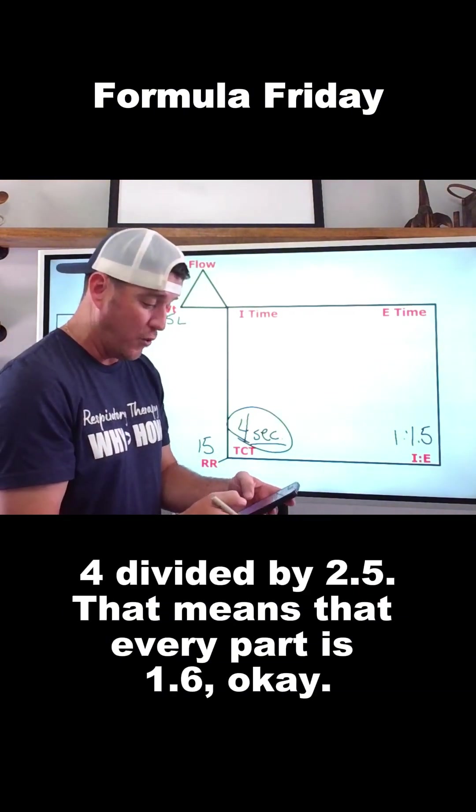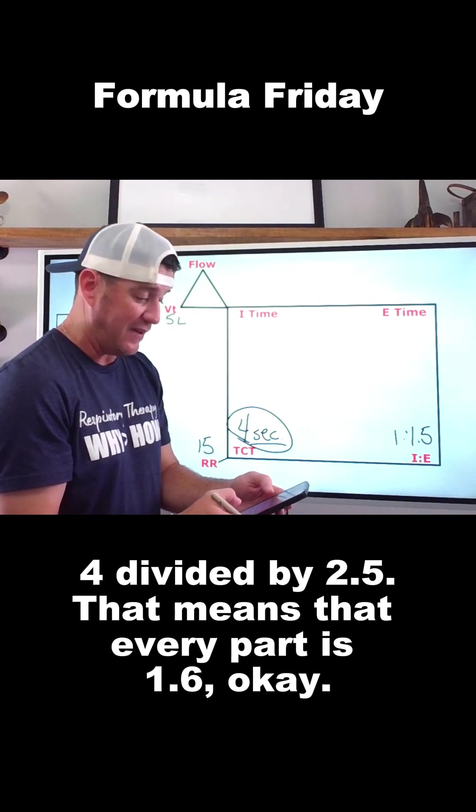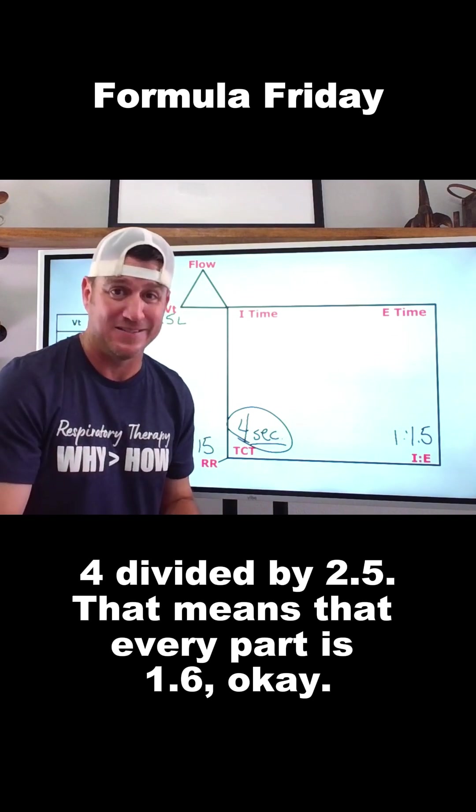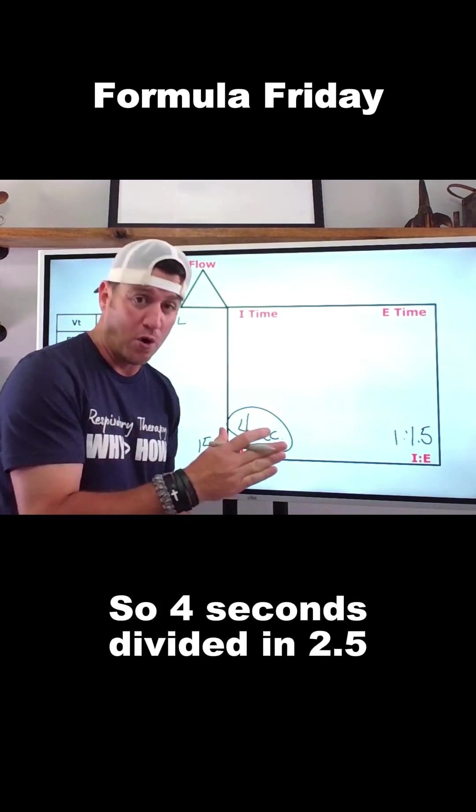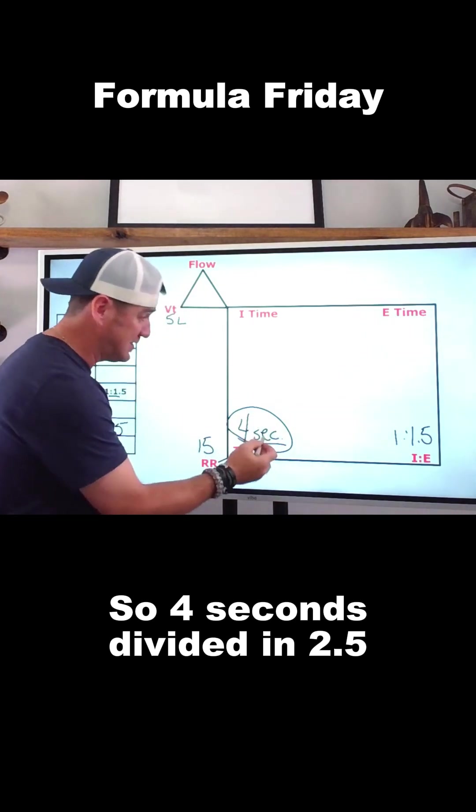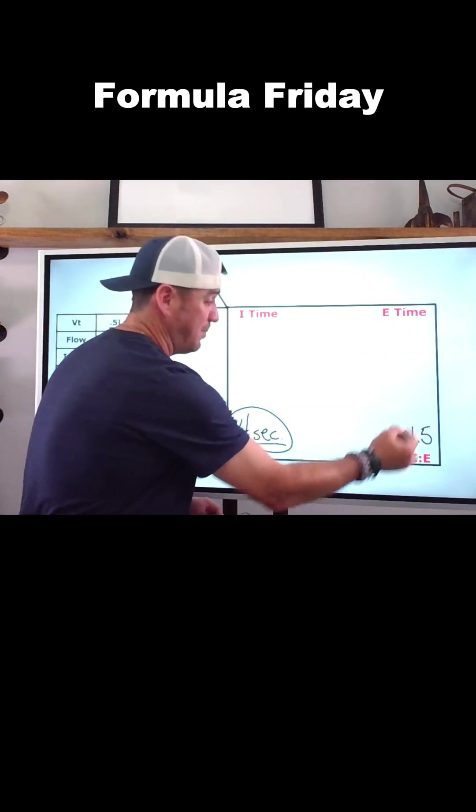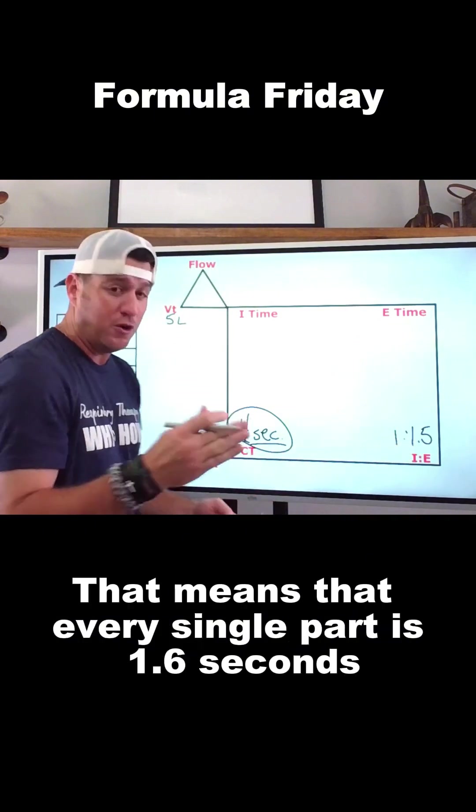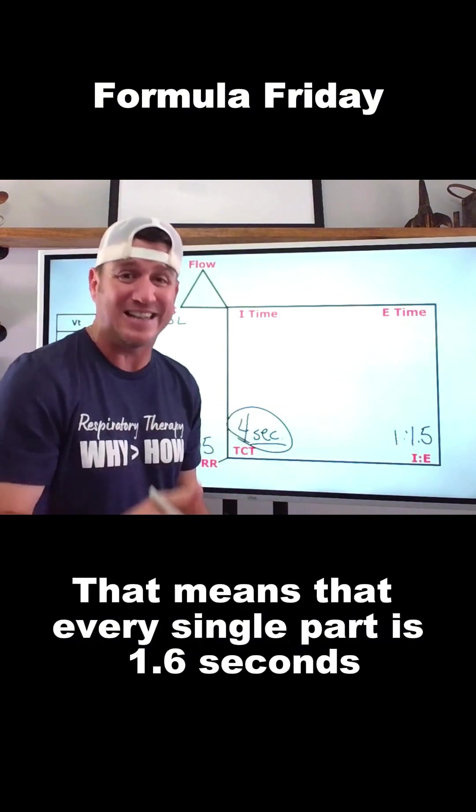So all I have to do is this: 4 divided by 2.5. That means that every part is 1.6, okay? So 4 seconds divided by 2.5, total parts 2.5, that means that every single part is 1.6 seconds.